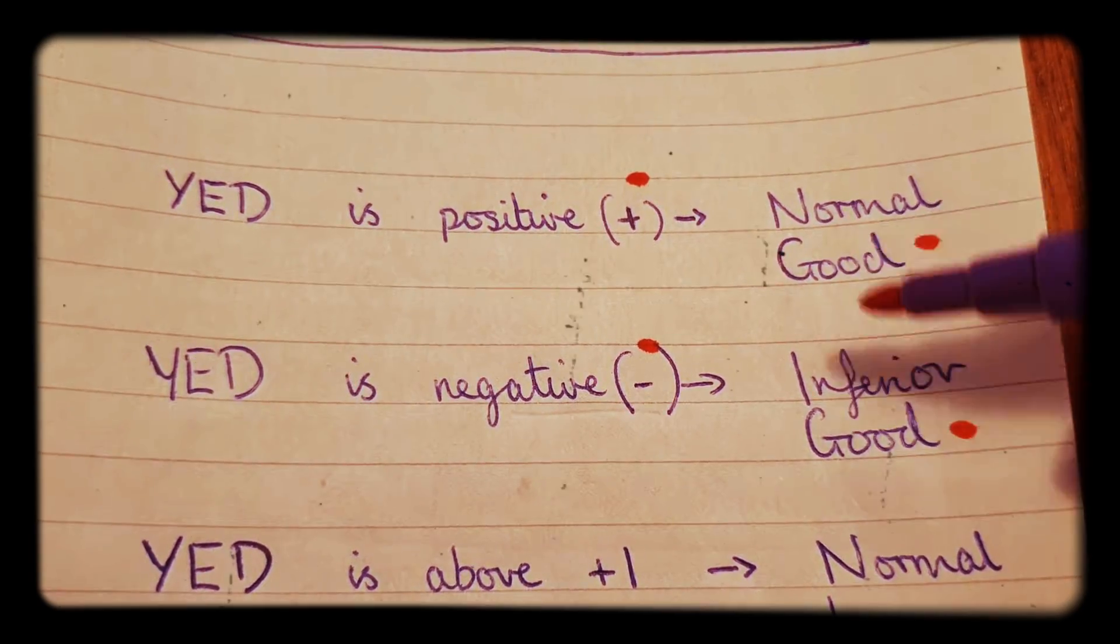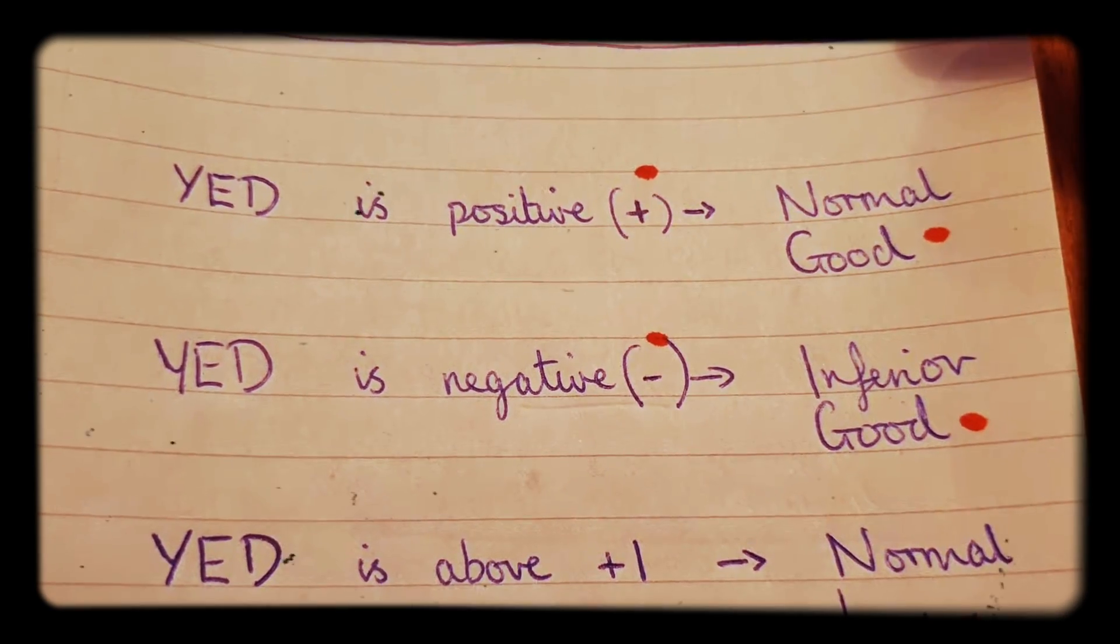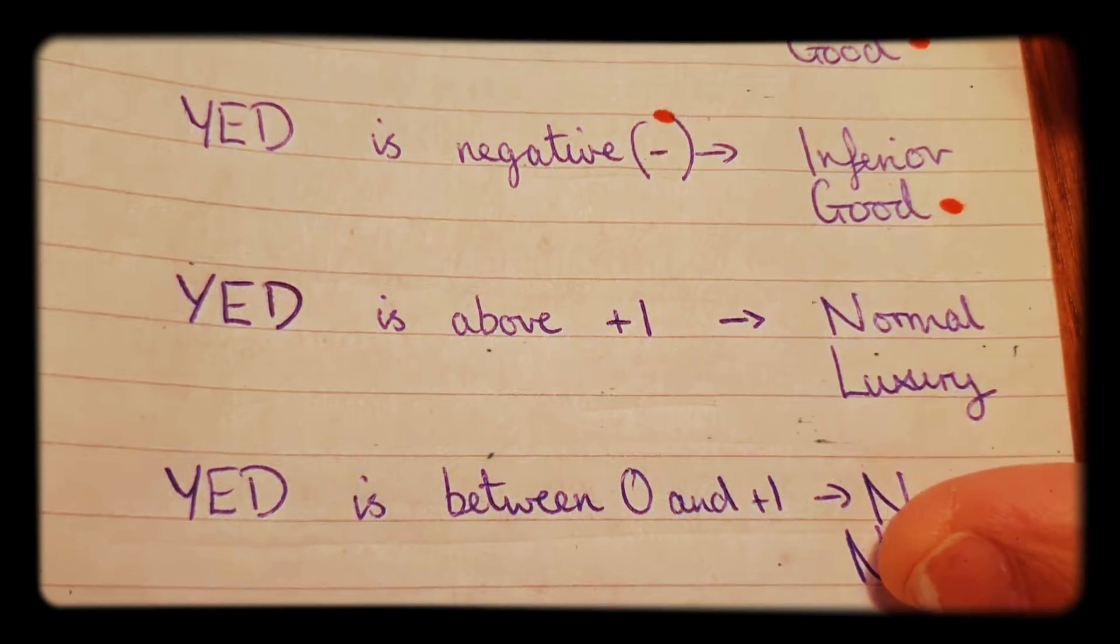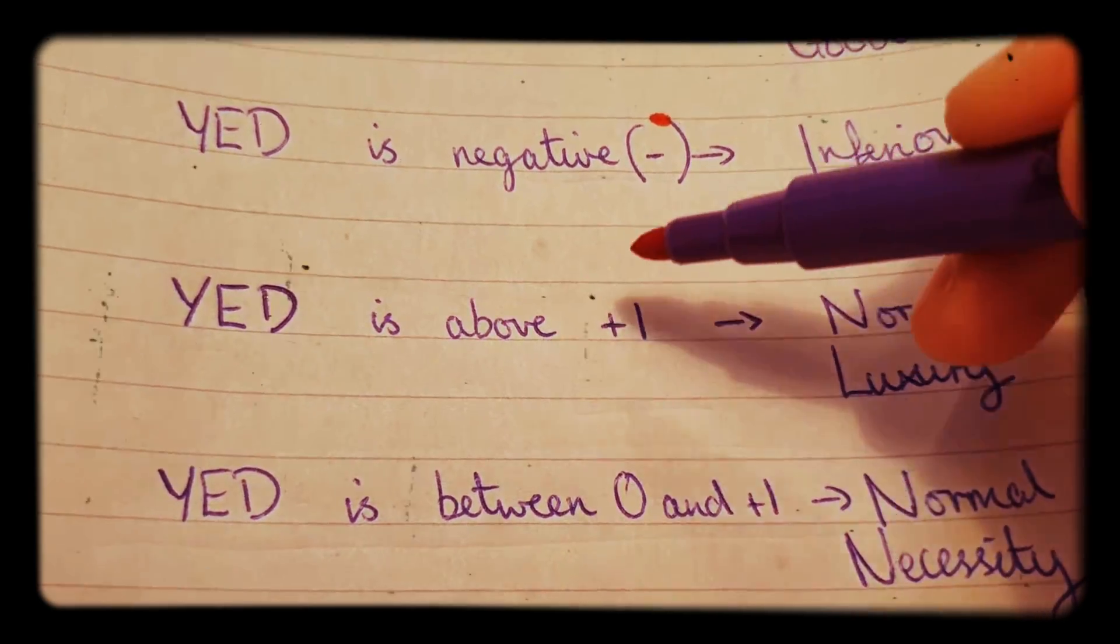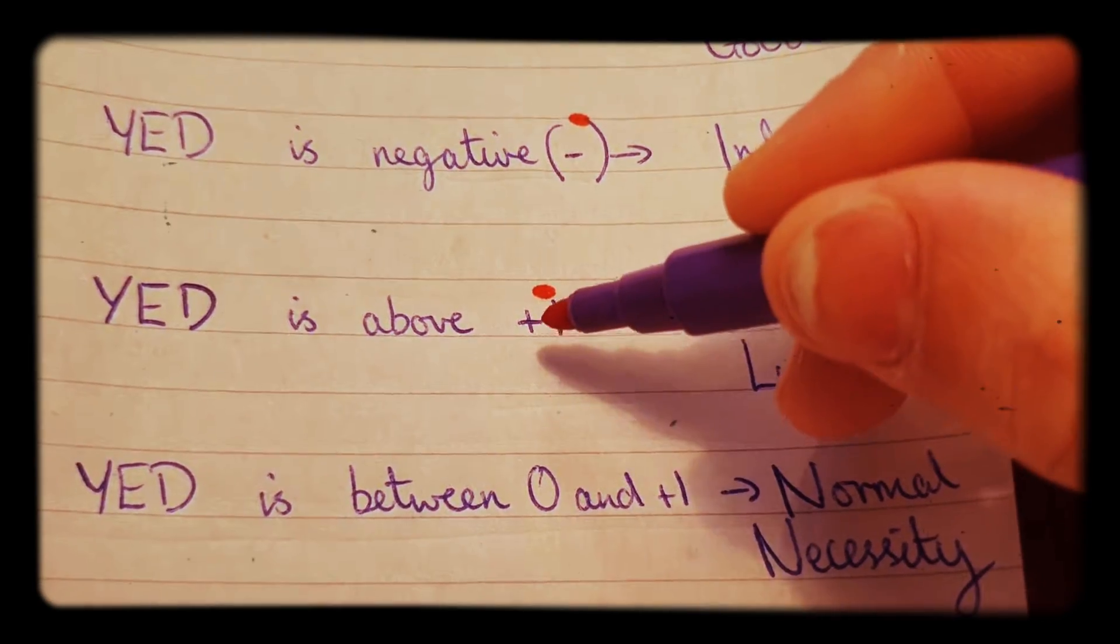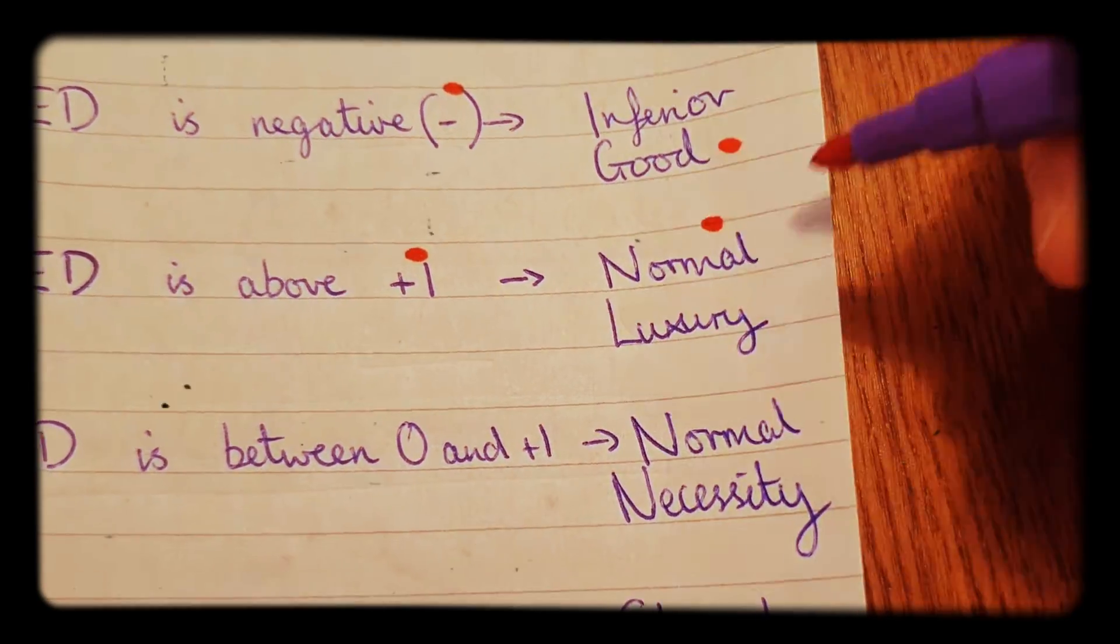These two things are the most important, but if you want to extract that data even further and figure out what it means, then you can actually go into a bit more detail. So if YED is above positive 1, then it's positive so it's a normal good, but because it's above 1 it's a normal luxury.